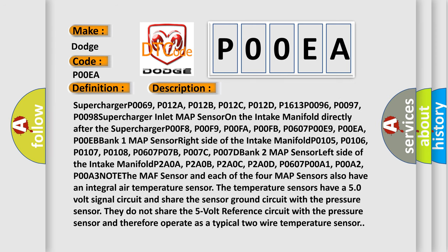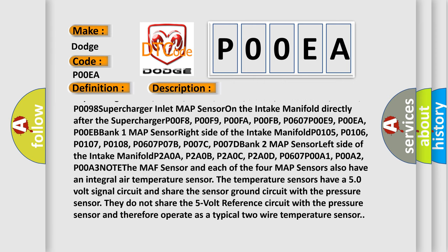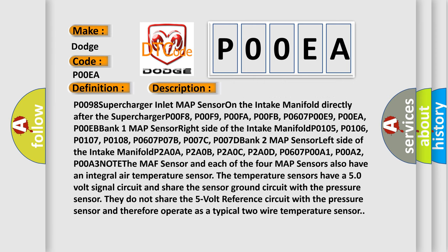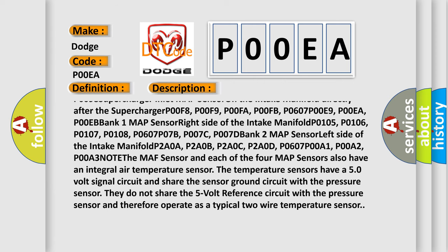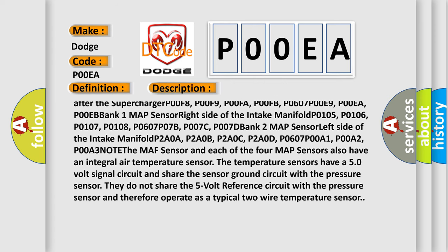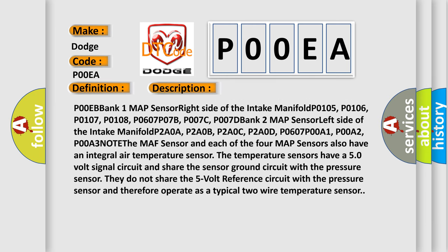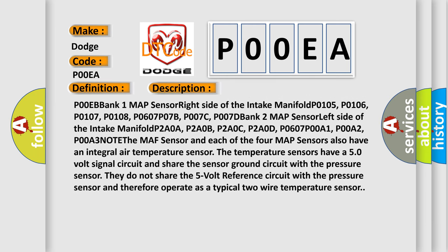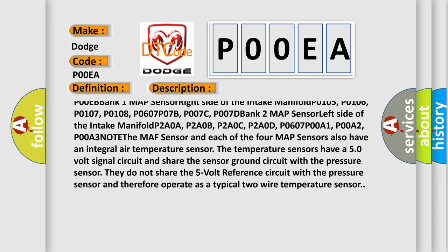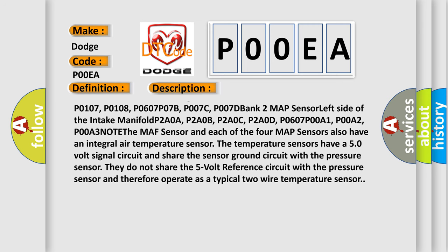Supercharger inlet MAP sensor on the intake manifold directly after the supercharger: P00F8, P00F9, P00FA, P00FB, P0607, P00E9, P00EA, P00EB. Bank 1 MAP sensor right side of the intake manifold: P0105, P0106, P0107, P0108, P0607, P007B, P007C, P007D.